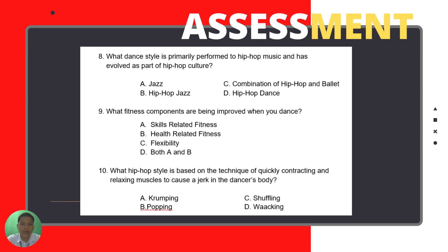Question number eight: What dance style is primarily performed to hip-hop music and has evolved as part of the hip-hop culture? Is it A — jazz; B — hip-hop jazz; C — combination of hip-hop and ballet; or D — hip-hop dance?